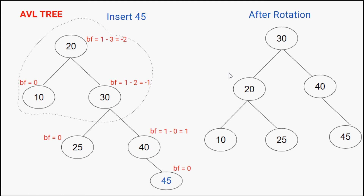After the rotation, all balance factors are within range: node 20 has balance factor 1 minus 1 equals 0; node 40 has 0 minus 1 equals minus 1; node 30 has height 2 on the left and height 2 on the right giving 0. All nodes have balance factors among 0, minus 1, and 1, so this is a perfectly balanced AVL tree.